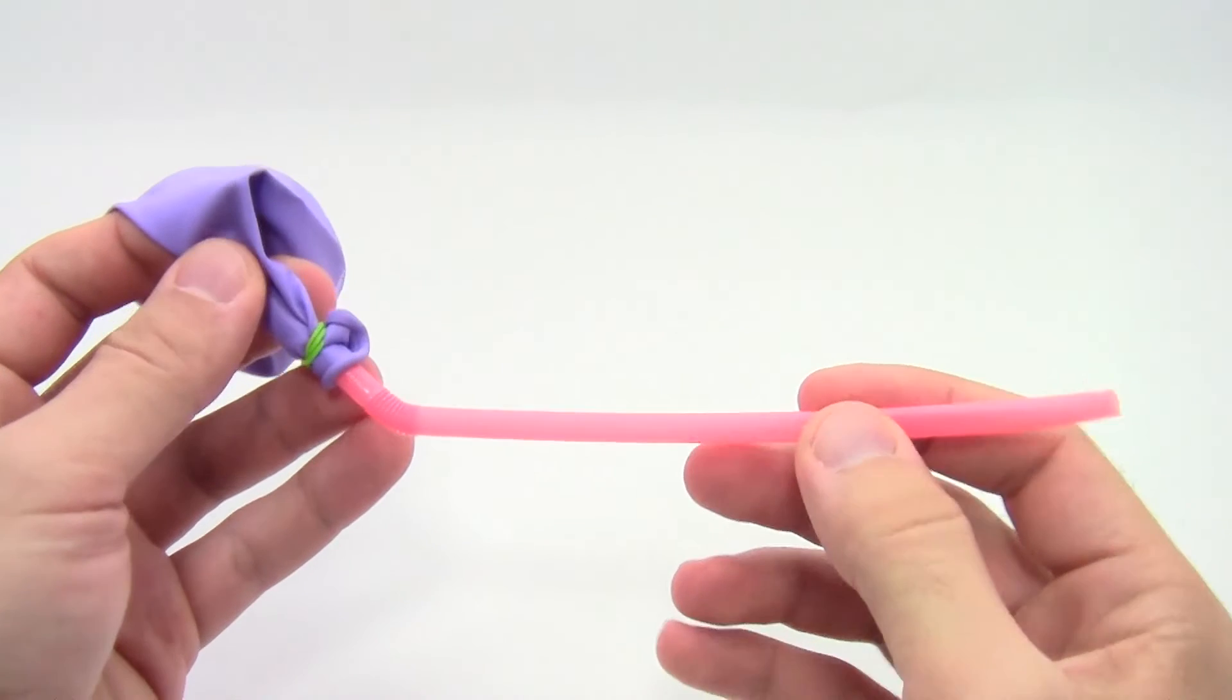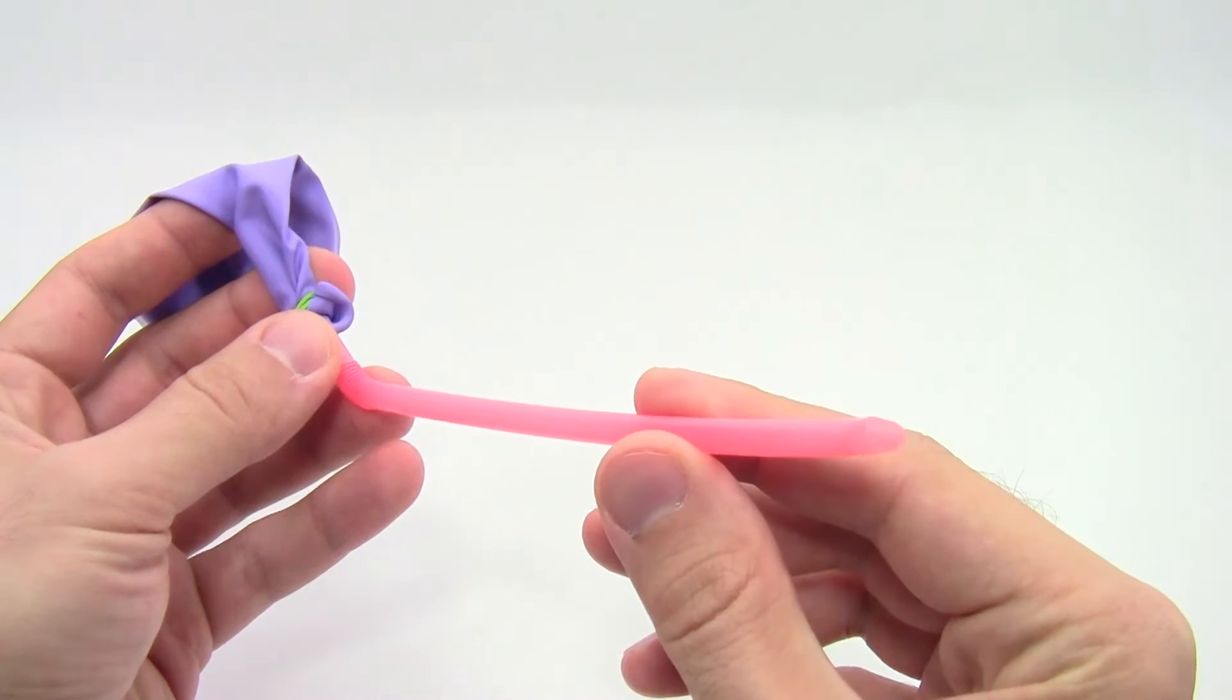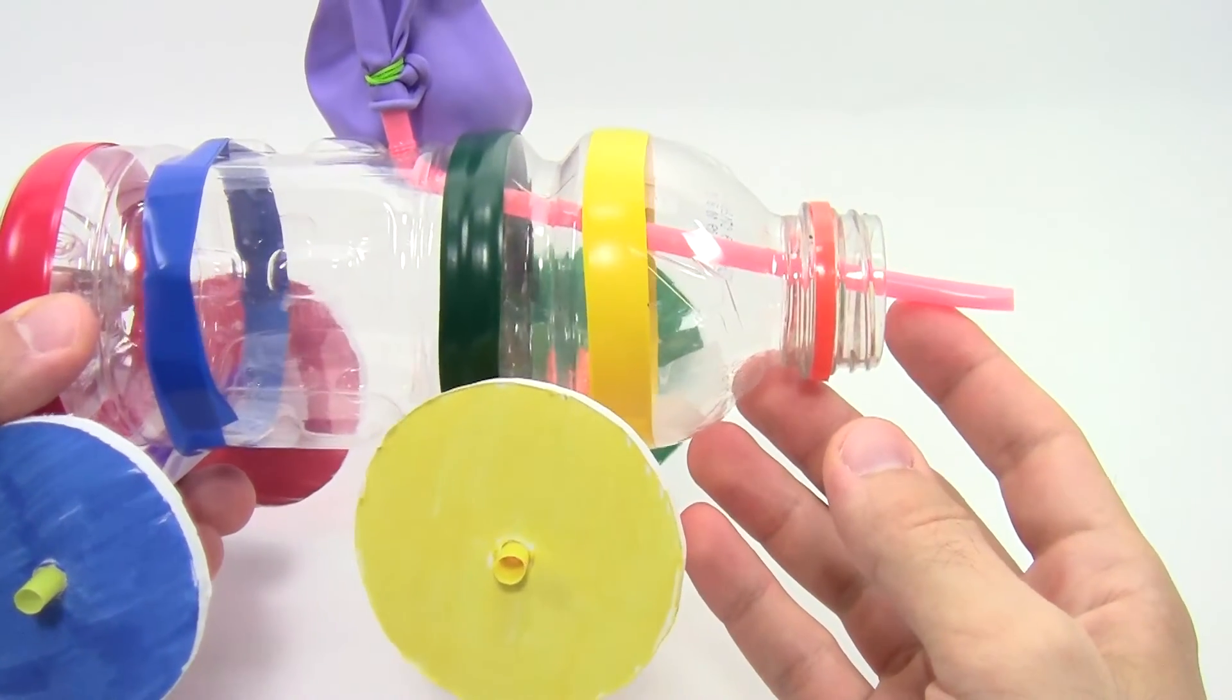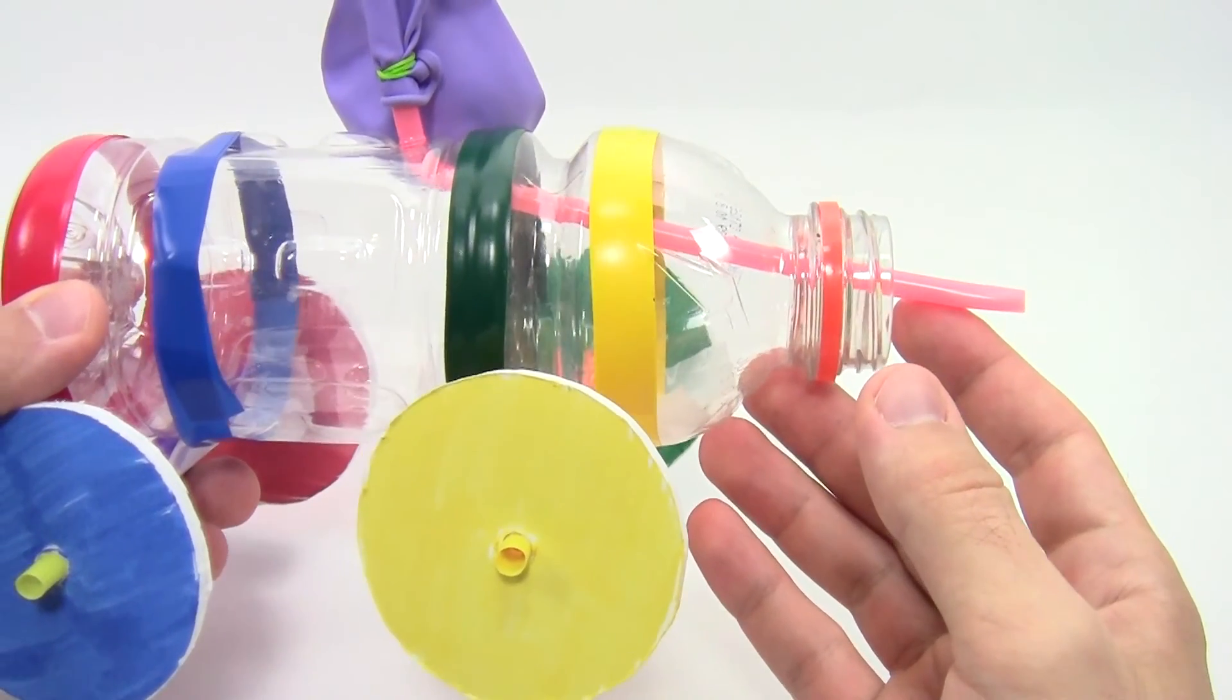To build a balloon car, tightly attach the neck of a balloon to one end of a straw using a rubber band. Inflate the balloon by blowing through the other end of the straw. Make sure the end of the straw is pointing backwards, and when air escapes from the deflating balloon, it will propel the car forward.